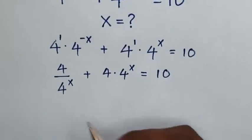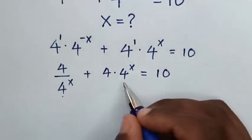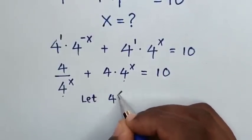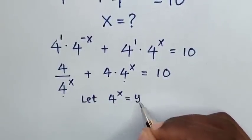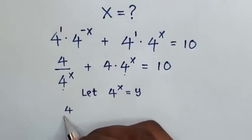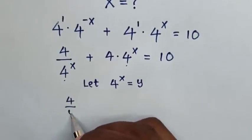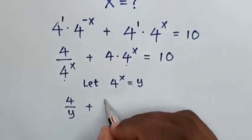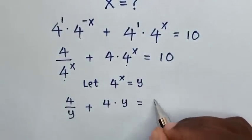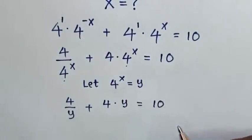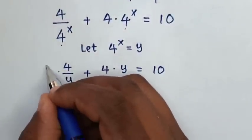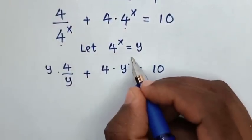In the next step, 4 power of x is common, so we let 4 power of x equal to y. Our equation becomes 4 over y plus 4 times y is equal to 10.